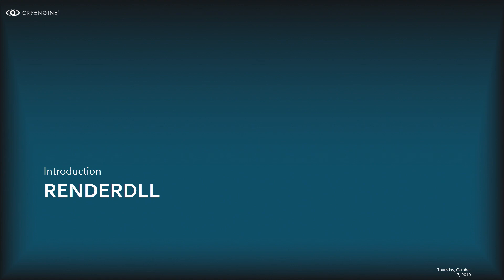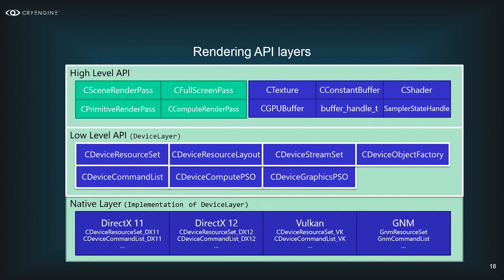That's the 3D engine covered. Let's go to the renderer — where it becomes interesting. In this section I'll present the API layers we have in the renderer: the interface functions and classes for interfacing with the graphics APIs. In the second part we'll look at how we actually render things — our graphics pipeline and the algorithms CryEngine implements.